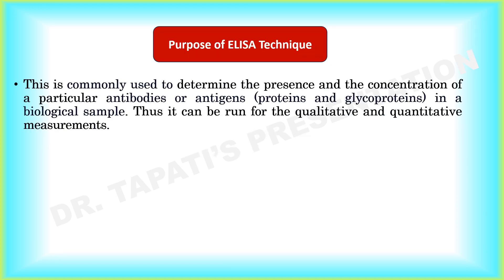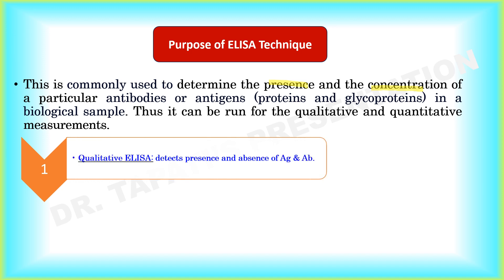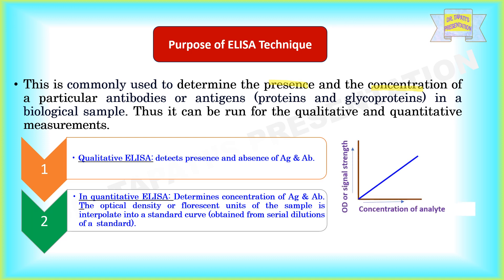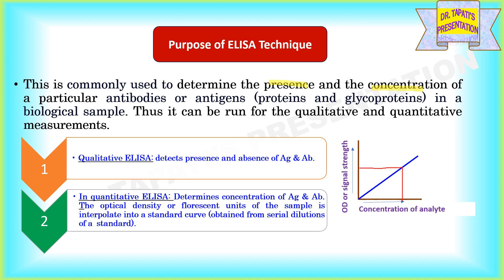This method is commonly used to determine the presence and concentration of particular antibodies or antigens in a biological sample — that means it can be run for qualitative and quantitative measurements. In case of qualitative ELISA, it provides a positive or negative result for a sample, detecting presence or absence of any component. In quantitative ELISA, the optical density or fluorescent units of a sample is interpolated in a standard curve, from which we can measure the concentration of a particular antibody or antigen.